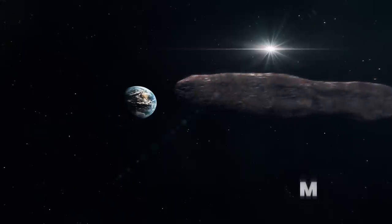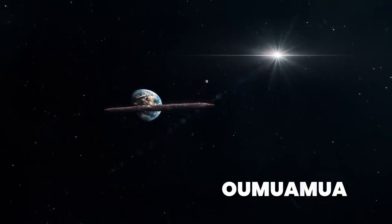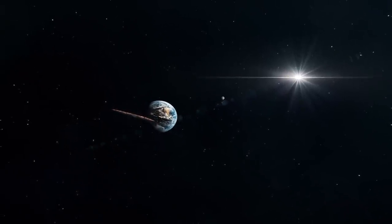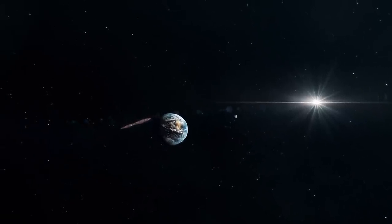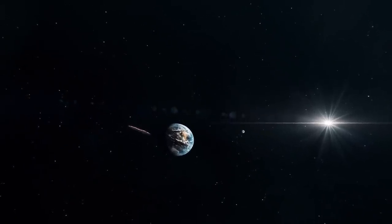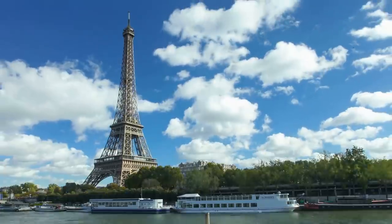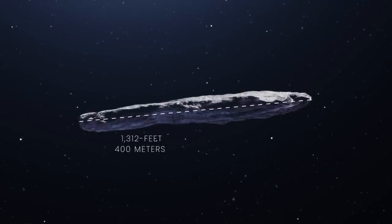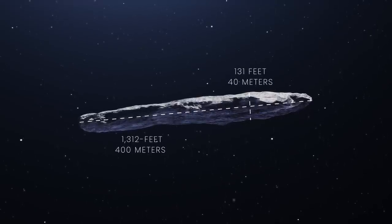Astronomers named it Oumuamua, which means a messenger from afar arriving first. At the time they believed it was some kind of elongated cigar-shaped object tumbling through space because of the way it changed brightness. It was estimated to be bigger than the Eiffel Tower, some 1,312 feet long and 130 feet thick.